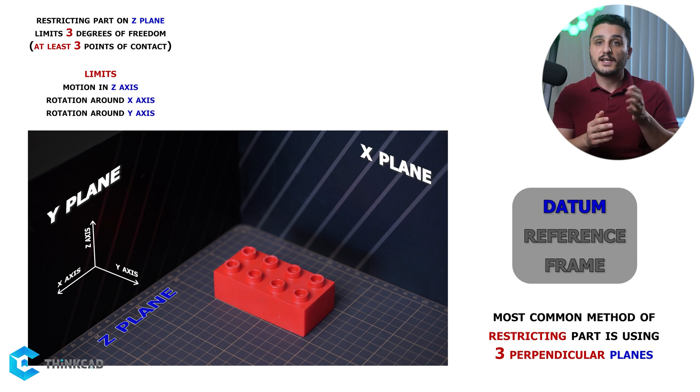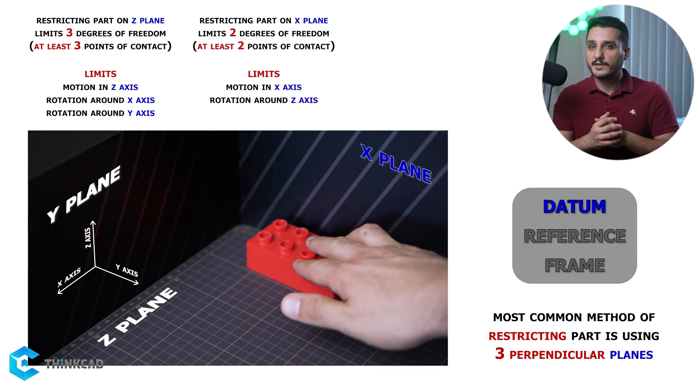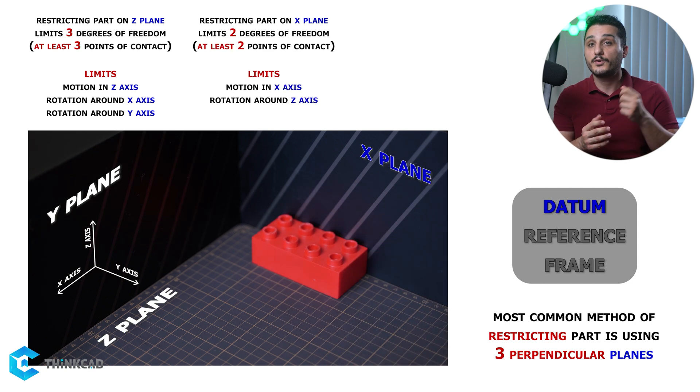If the second plane is the x-plane, it limits two more degrees of freedom by having a minimum of two points of contact with your surface. This limits motion in the x-axis and rotation around the z-axis.